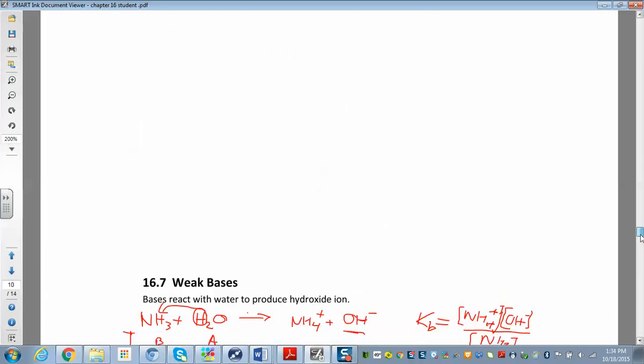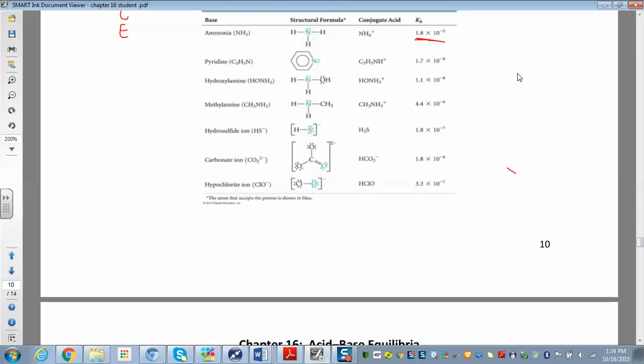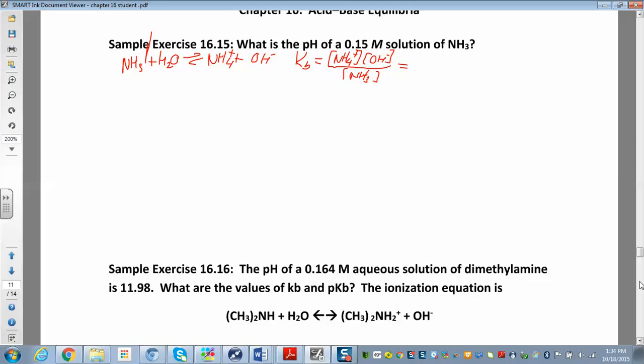The table above has the KB value. If you go up there, there it is: 1.8 times 10 to the negative 5. That's our KB. Usually that's given to you in the problem, but you have the table right above it. 1.8 times 10 to the negative 5, that's your KB value.